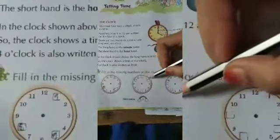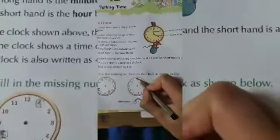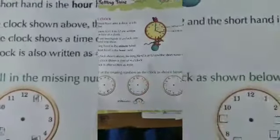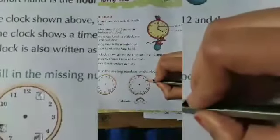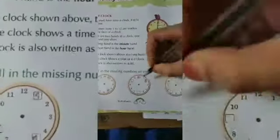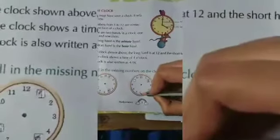So, here see which numbers are missing. So, here number 12 is missing. So, after 12, 1. Then number 2 is missing. Isn't it? So, 3, 4, 5. Number 6 is missing.